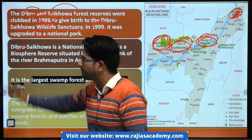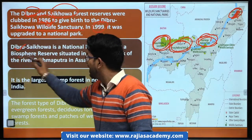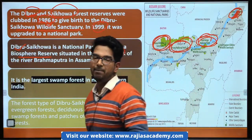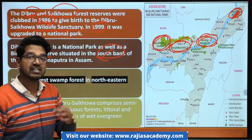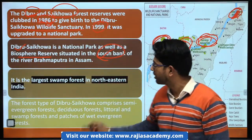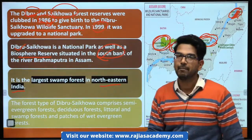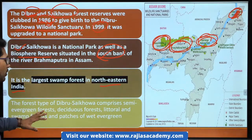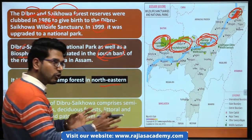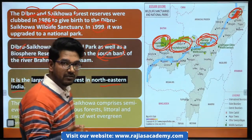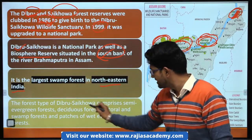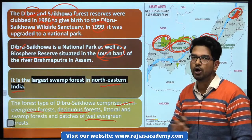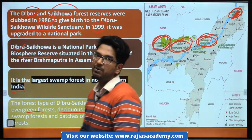Dibru Sikhowa National Park was upgraded into a biosphere reserve, aur as I told you, south bank pe hum ise dekhte hain. Ye largest swamp — swamp yaani jahan par dal-dal like condition hoti hai, paani khada rahta hai — aisa largest forest hai north east ka. Yahan par kaunsi type ki vegetation milti hai? We have semi-evergreen, semi-evergreen littorals, deciduous forests, aur kuch patches milenge wet evergreen ke. Aur yahan par swampy forests bhi milte hain.